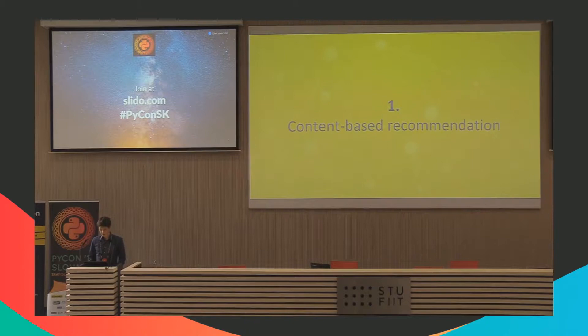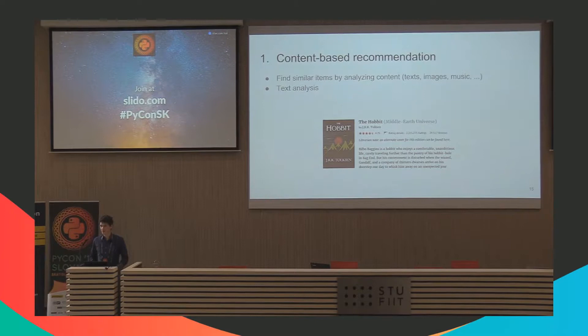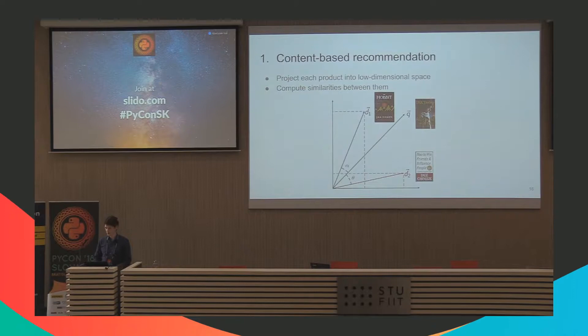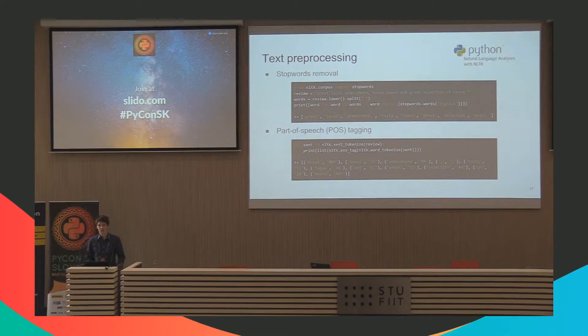To tackle these challenges, we tried content-based recommendation, which is based on analyzing the content of products — in our case, text analysis. For a book, we might analyze its description, author, or reviews. The idea is to project each product into some vector space and compute similarities between them. For example, The Hobbit and The Fellowship of the Ring are positioned closer to each other than to other books.